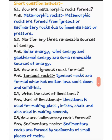Now, short question answers. Question number 1: how are metamorphic rocks formed? Metamorphic rocks are formed from igneous or sedimentary rocks due to immense heat or pressure. जो metamorphic rocks होते हैं वो igneous and sedimentary rocks में जब बहुत ज़्यादा heat और pressure पड़ता है उस कारण बनते हैं।